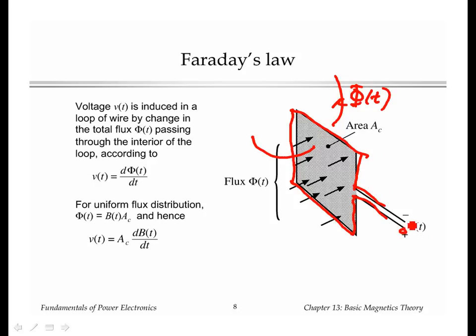Here we have the loop is not shorted or closed. We bring out these terminals, and if phi changes with time, then a voltage is induced around the loop, and that voltage is given by the derivative of the flux.